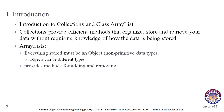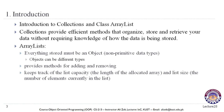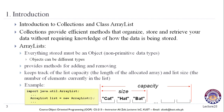Objects stored in an ArrayList can be of different types. ArrayList provides methods for adding and removing elements. ArrayList keeps track of the list capacity — the length of the allocated array — and the list size, which is the number of elements currently in the list. The size is the number of elements, while the capacity is how many elements can be stored.